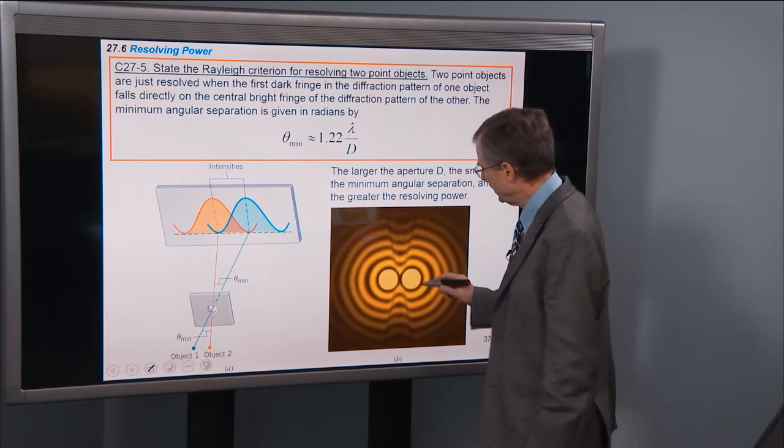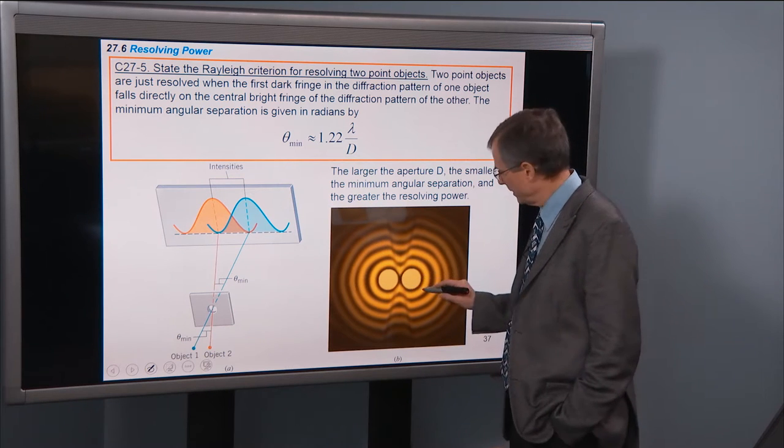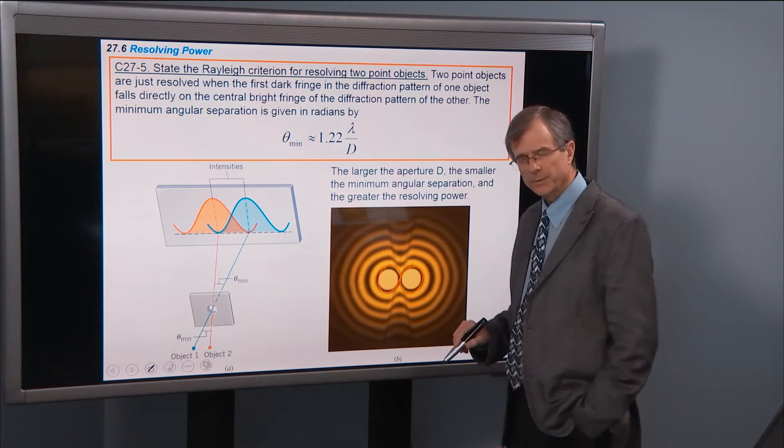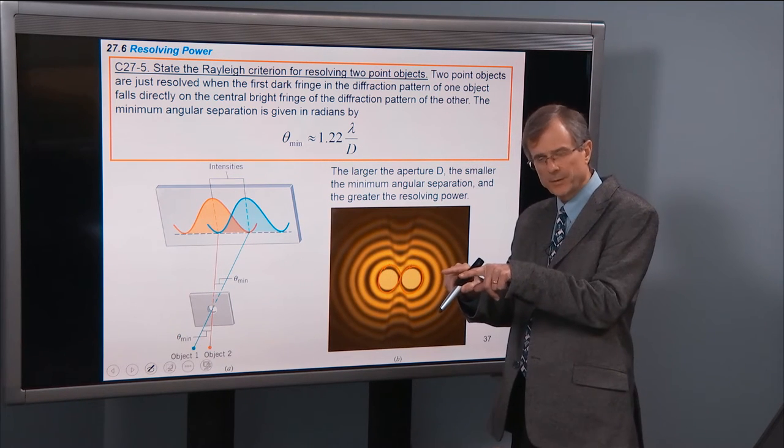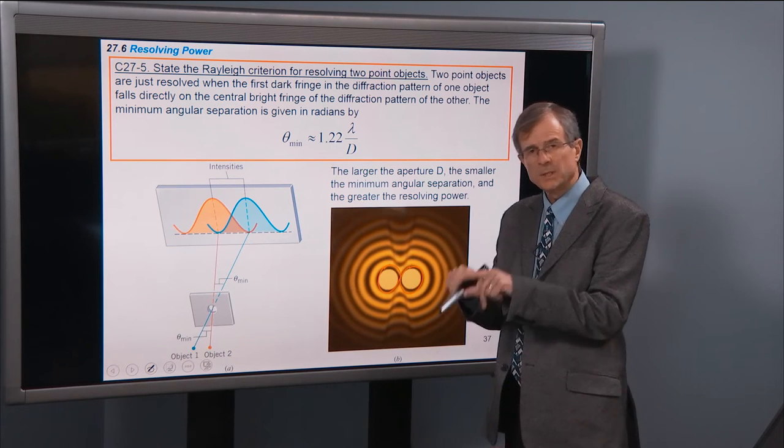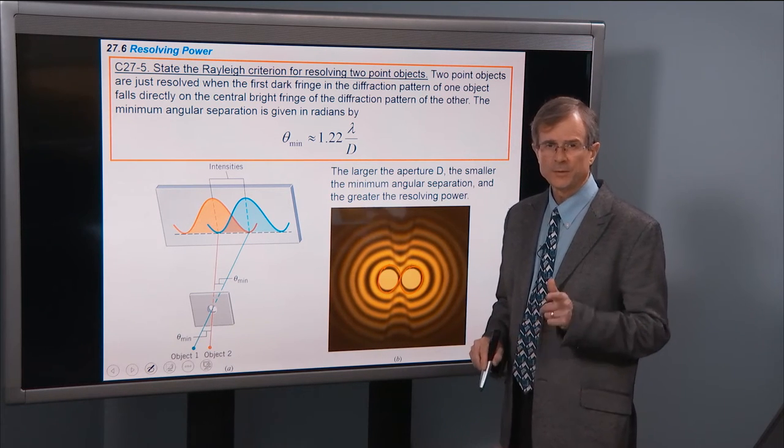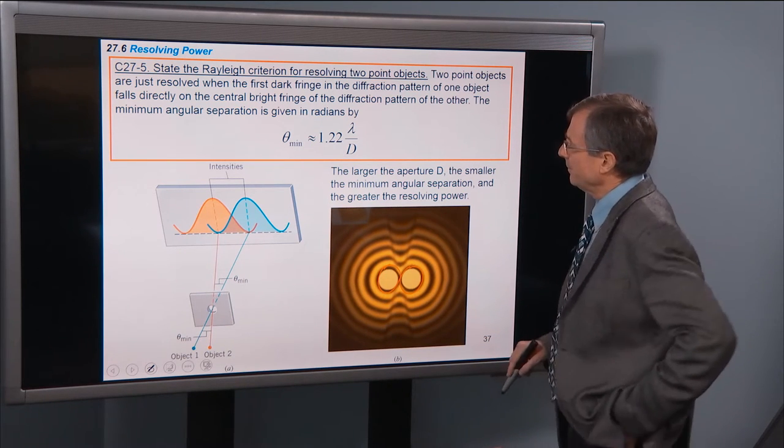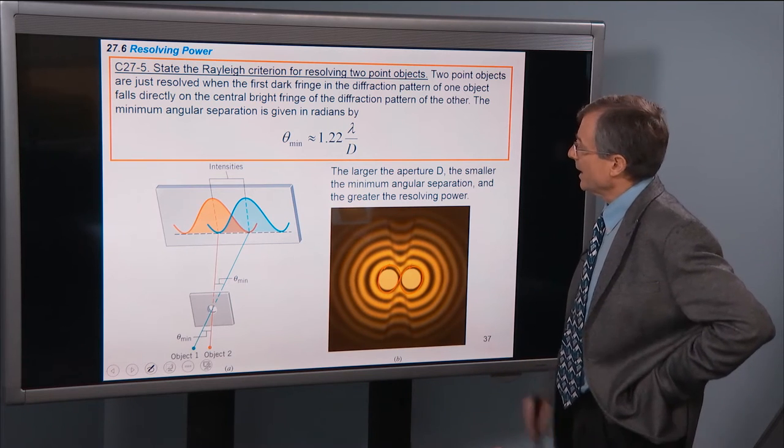But if they're not well separated, and especially if the central maximum of those two patterns get close enough together that they're actually beginning to touch and merge, then you cannot tell that there are two sources. So what happens is, let's just write it down.